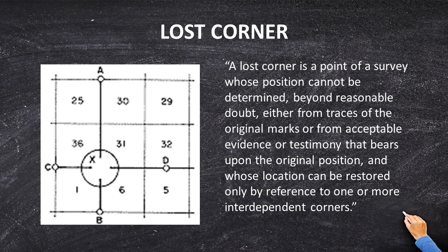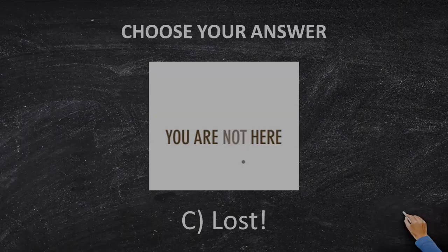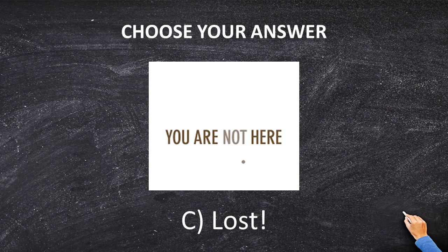Last but not least: a lost corner is a point of survey whose position cannot be determined beyond a reasonable doubt, either from traces of the original marks or from acceptable evidence, and whose location can be restored by one or more independent corners. The northeast quarter corner and the northwest quarter corner are both independent corners — they are not based on the north quarter. We re-established the north quarter based on those two independent corners. Therefore, the correct answer is C: the corner is lost.